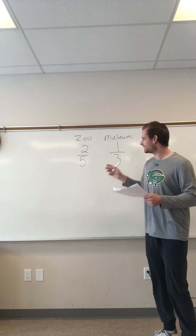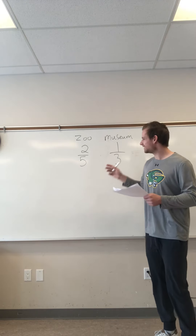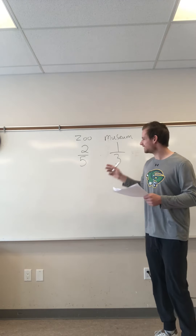Starting with: two-fifths of the students in a class voted for a trip to the zoo. So two-fifths voted for a trip to the zoo. We then have one-third voting for a trip to the museum. So one out of three voting for a trip to the museum.